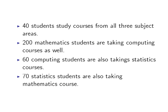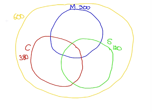Now, we are given the following pieces of information. First, 40 students are taking courses from all three subject areas. I am going to write that into my Venn Diagram. All three subject areas correspond to the central region enclosed by each of the circles — the green circle for Statistics, the blue circle for Mathematics, and the red circle for Computing. So, 40 students are taking subjects from each of the three subject areas.